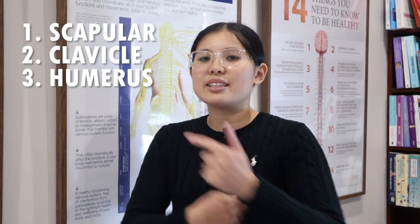To better understand shoulder impingement, it's important to understand at least the basic anatomy of the shoulder. Our shoulders are comprised of three bones: the scapula, the clavicle, and the humerus — also known as the shoulder blade, the collarbone, and the upper arm bone. Together, these bones make up an incredibly complex and mobile ball and socket joint.